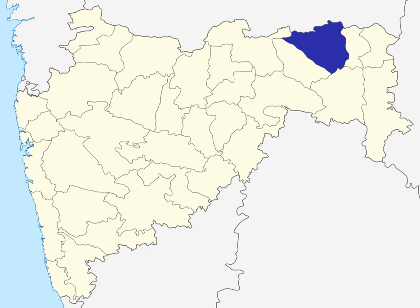Nagpur district is divided into 14 Talukas: Ramtek, Umred, Kalmeshwar, Katol, Kamthi, Kuhi, Narkhed, Nagpur, Nagpur Rural, Parseoni, Bhiwapur, Mouda, Savner, and Hingna.